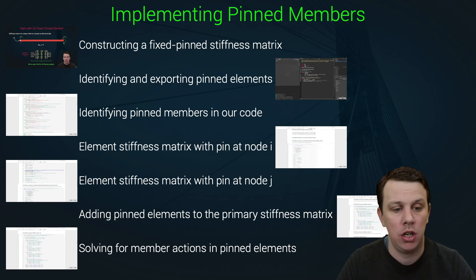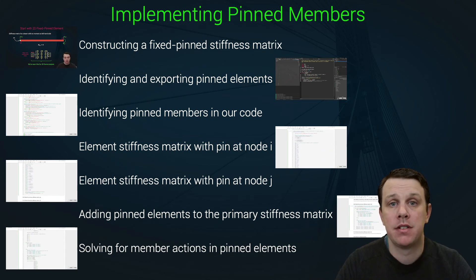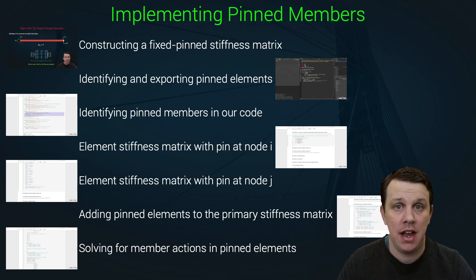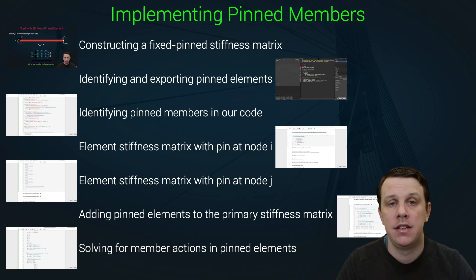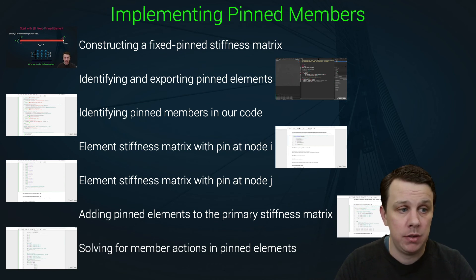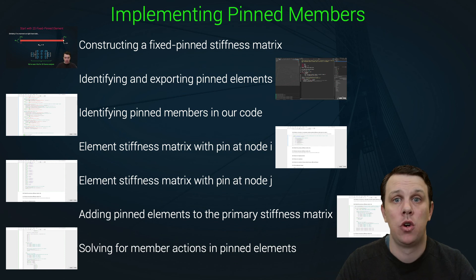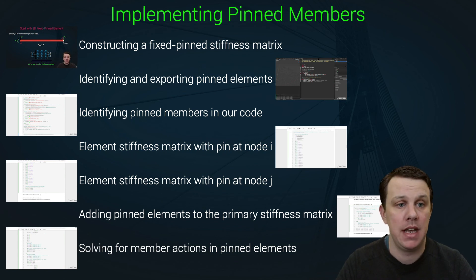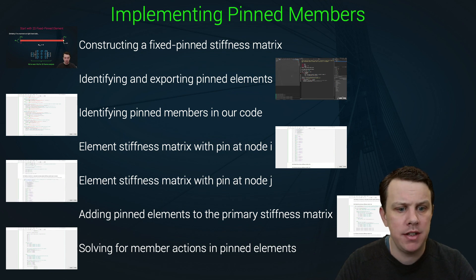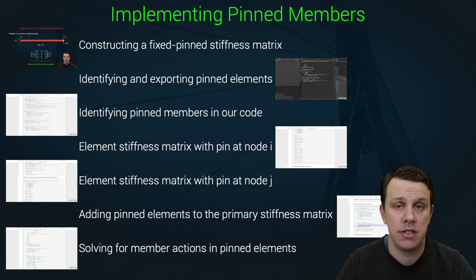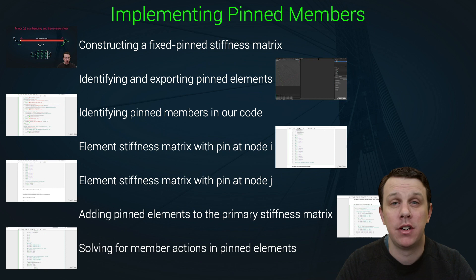Once we have all the pinned members defined within our solver, we can build the relevant stiffness matrix for these pinned elements and incorporate those into the larger primary stiffness matrix that models the whole structure. Once that's done, we can proceed and solve the structure as normal — and that will wrap up the implementation of this feature. It's not a difficult feature to implement, building on what we've done previously for 2D structures, so we can just crack on with it.